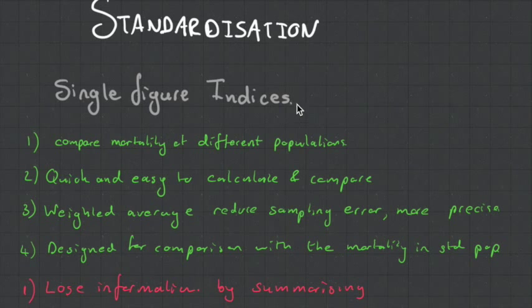What we need is a single figure indice. The advantages of having a single figure indice is that we can compare mortalities of different populations. These things are quick and easy to calculate, they're based on weighted averages so they reduce sampling error, and they're designed for comparison with mortality in a standard population.